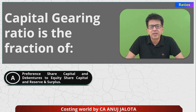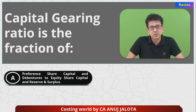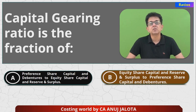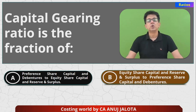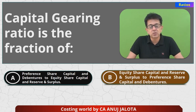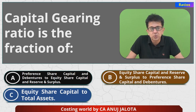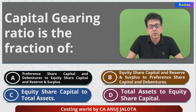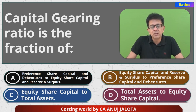Option A: preference share capital and debentures to equity share capital and reserves and surplus. Option B: equity share capital and reserves and surplus to preference shares and debentures. Option C: equity share capital to total assets. Option D: total assets to equity share capital.